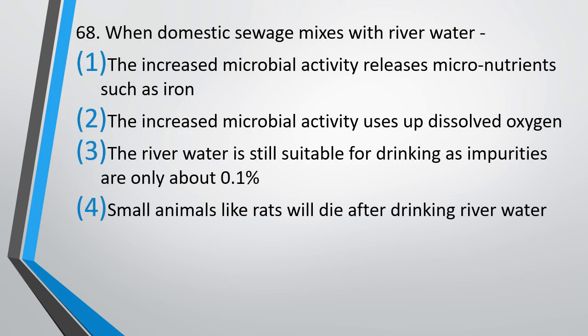Question No. 68. When domestic sewage mixes with river water, which of the following occurs? Option A: Increased microbial activity releases micronutrients such as iron. Option B: Increased microbial activity uses dissolved oxygen. Option C: The river water is still suitable for drinking as impurities are only about 0.1%. Option D: Small animals like rats will die after drinking the river water. The correct answer is Option B: Increased microbial activity uses dissolved oxygen.